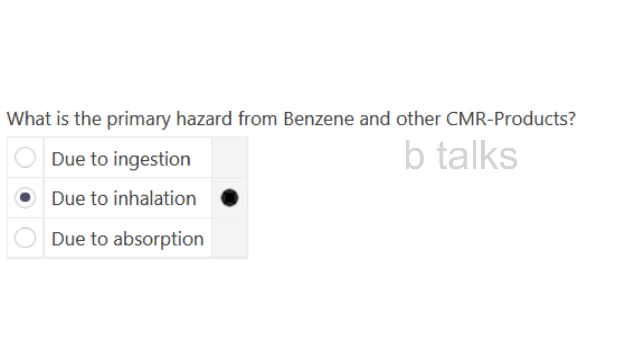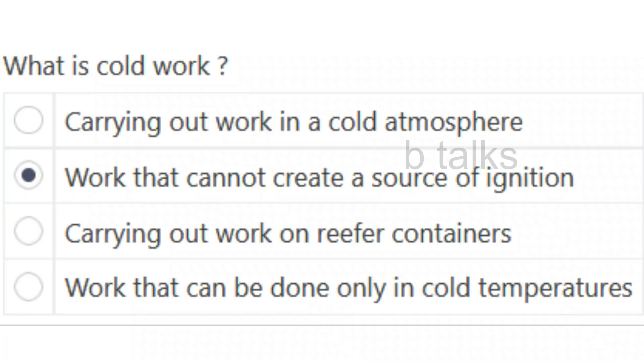What is the primary hazard from benzene and other CEMR products? Options: Due to ingestion, Due to inhalation, or Due to absorption? Answer: Due to inhalation.